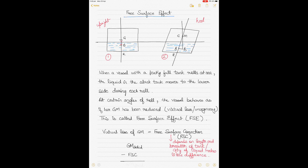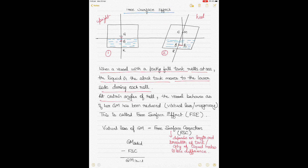The heeling may be due to wind, waves, or a sudden large alteration of course — possibly over-tight moorings — but there is no shifting of weights involved. When the vessel heels with no weight shift, the center of gravity remains where it is. It is only the center of buoyancy that shifts, because the center of buoyancy is the geometric center of the underwater volume of the ship.